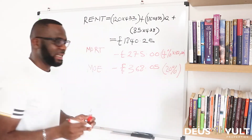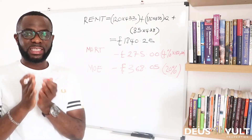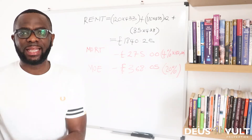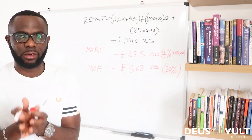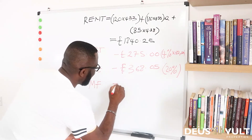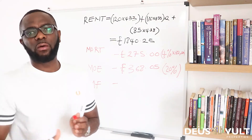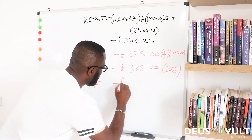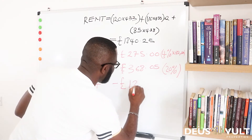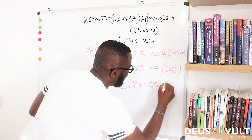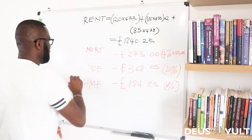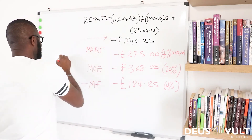The next thing to consider is our management fee — this is the letting agent fee, which is 10% of our rent. So management fee: minus 10% of £1,840.25, which is £184.25. That's going out of our rent as well.